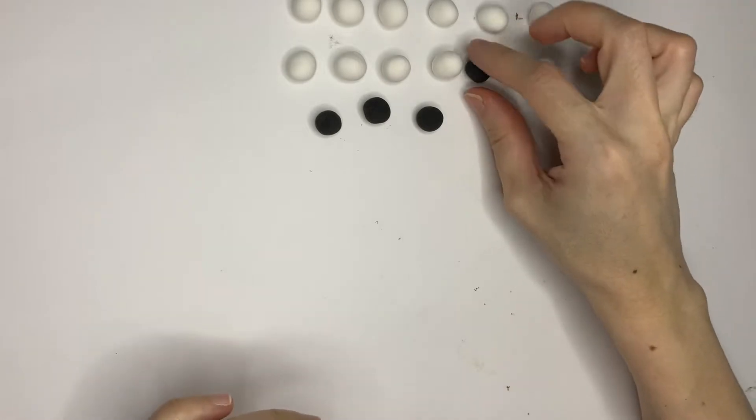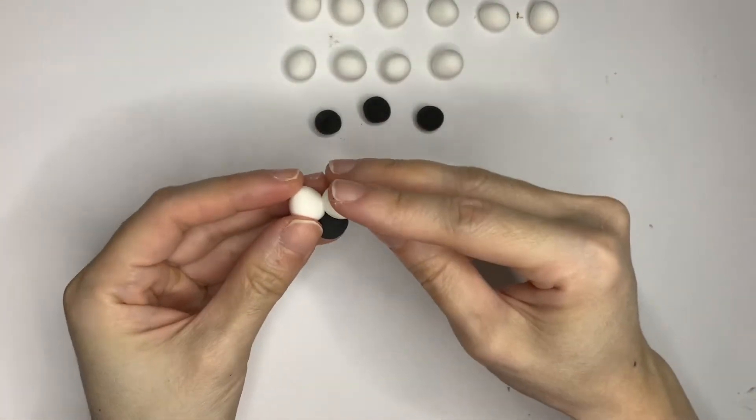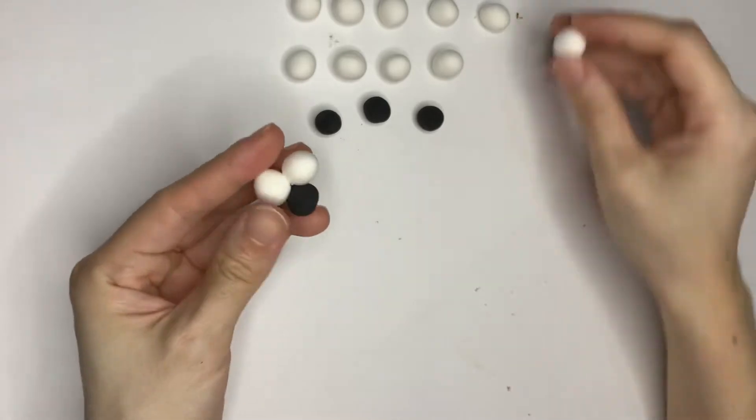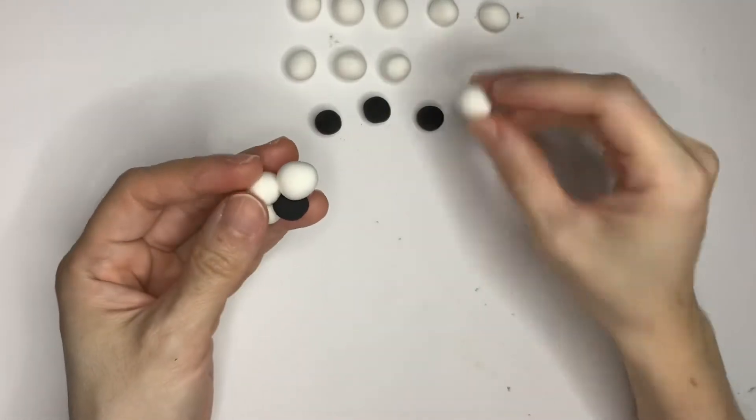Now we are going to join the balls together. The rule of joining them is each black ball must be circled by five white balls.